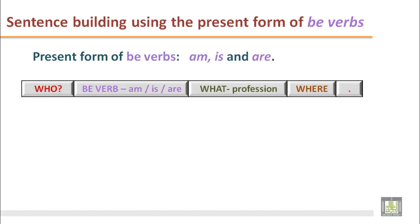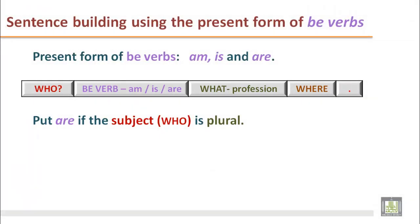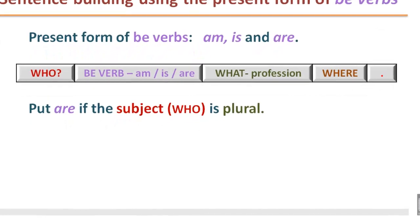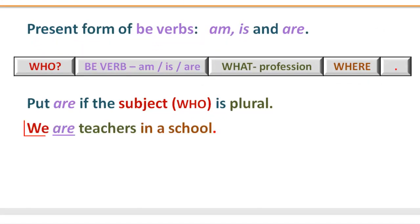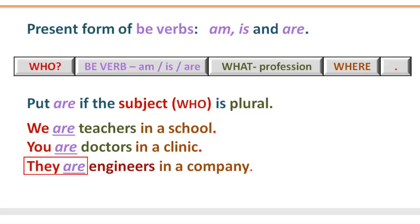Now we will talk about BE verbs with plural subjects. The same structure applies: who for the subject, BE verbs like am, is, are, the third step is about profession, and the last two are where and the full stop. Put 'are' if the subject is plural. We are teachers in a school — 'we' is a plural pronoun and it requires 'are.' You are doctors in a clinic — 'you' here refers to doctors, and doctors are plural, so we use 'are.'